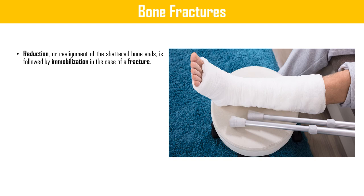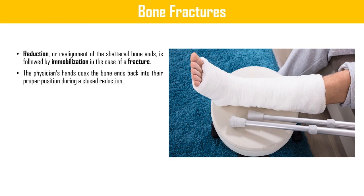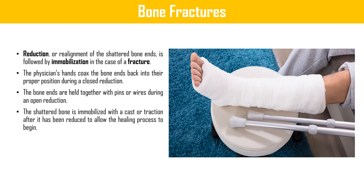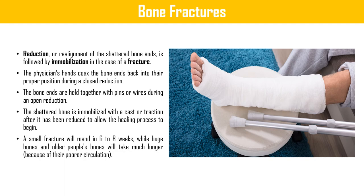Bone fractures: reduction or realignment of broken bone ends is followed by immobilization. In a closed reduction, the physician manually sets the bone ends back into proper position; in an open reduction, bone ends are held together with pins and wires. The shattered bone is then immobilized with a cast or traction after reduction to allow the healing process to begin.